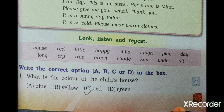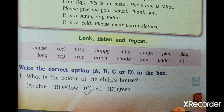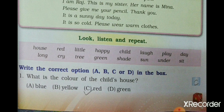Write the correct option A, B, C, or D in the books. First of all, we are going to read the sentence. First question: what is the color of the child's house? The answer is red.